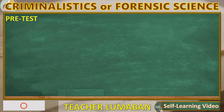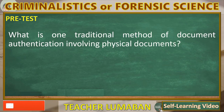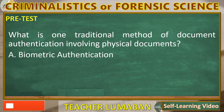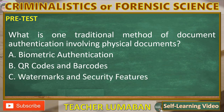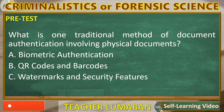What is one traditional method of document authentication involving physical documents? A. Biometric authentication. B. QR codes and barcodes. C. Watermarks and security features. D. Blockchain technology.